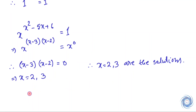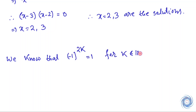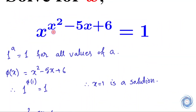Now we will use the following fact to check whether x equals minus 1 is a solution of the given equation. We know that minus 1 raised to the power 2k equals 1 — that is, if the exponent is an even number, then we get 1. So let us check whether the exponent evaluated at minus 1 is an even number or not.